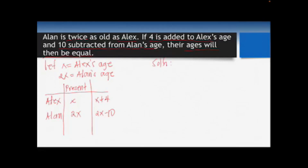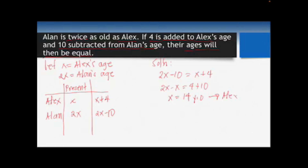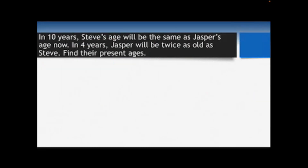Setting up the equation: 2x − 10 = x + 4. Combining like terms: 2x − x = 4 + 10, so x = 14. Alex is 14 years old. Alan is twice as old as Alex, so Alan's age is 2 × 14 = 28 years old.